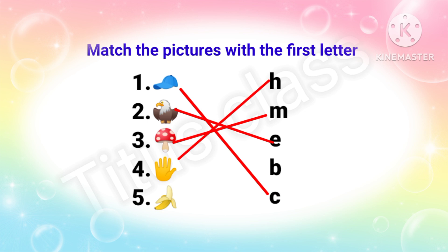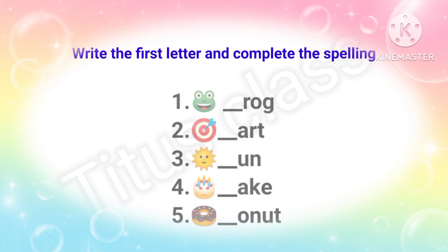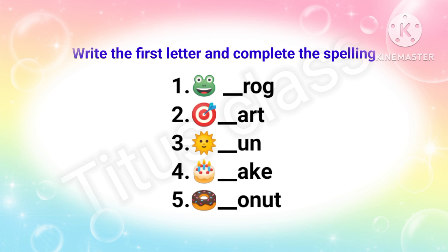Fifth one: banana. Banana starts with letter B. So it is very easy — practice it daily. Now move to our next question: write the first letter and complete the spelling. Here there are some pictures and you have to write the first letter of their spelling.